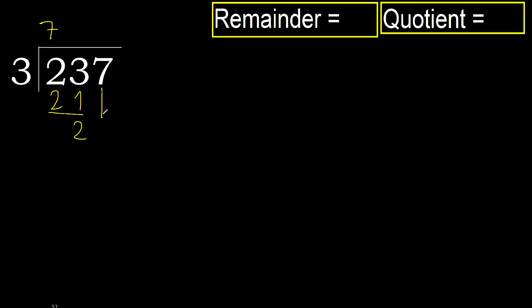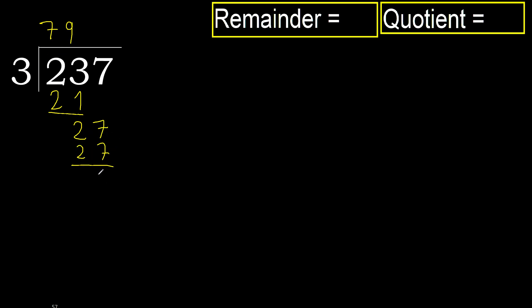Next, bring down: 27. 3 multiplied by 9 is 27 — 27 is not greater. Subtract, remainder is 0.